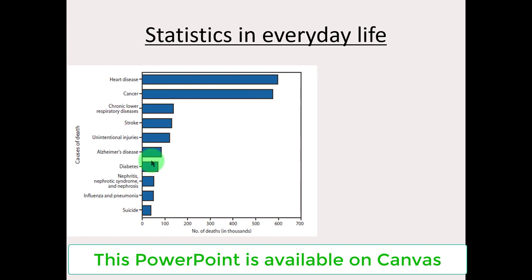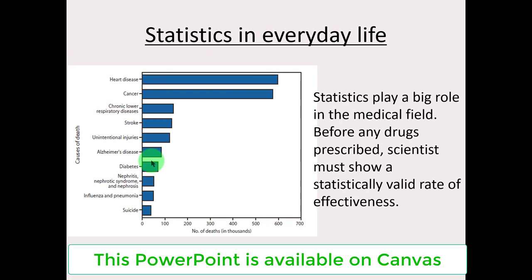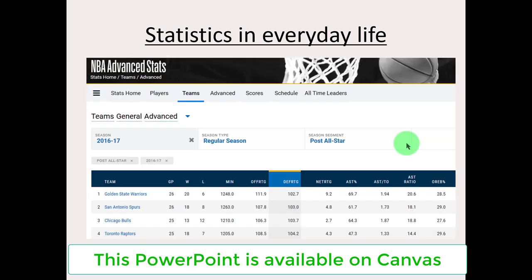Another topic riddled with statistics is the health field, especially health related to fatalities. Another basic graph conveys a lot of information really quickly. Certainly, if prescriptions or medication are administered in relation to some of these ailments, before any drug is prescribed those drugs need to be tested and their efficacy needs to be verified — and a lot of statistics will play a role in that. Lastly, if you are a sports fan, certainly everything about sports has been dissected in terms of stats for teams and players and different variables.